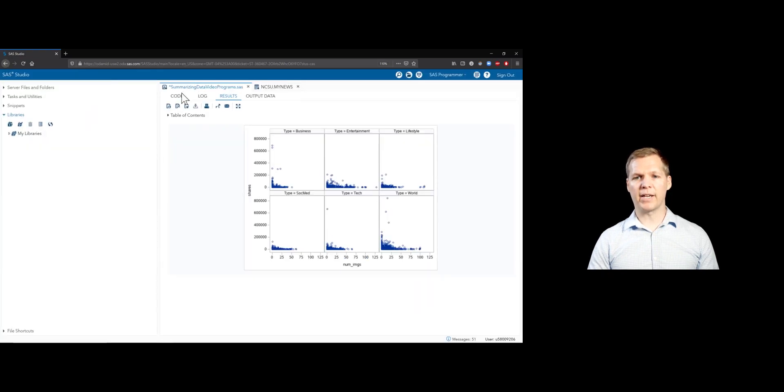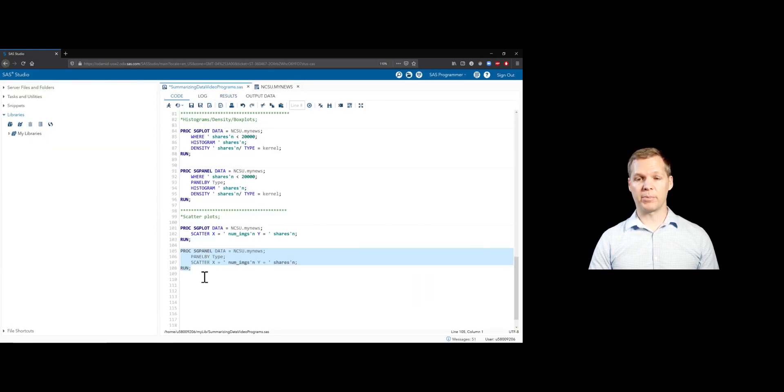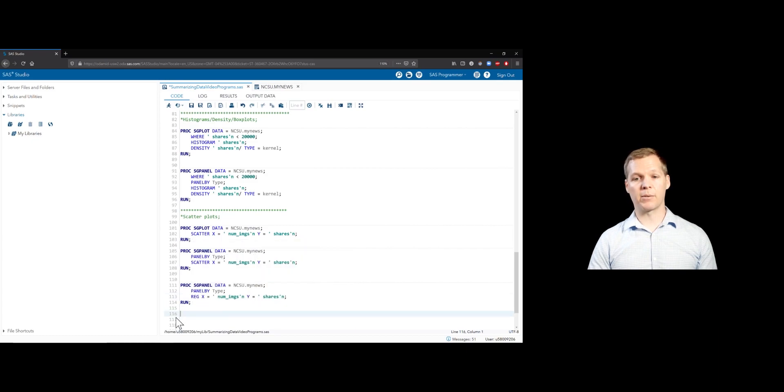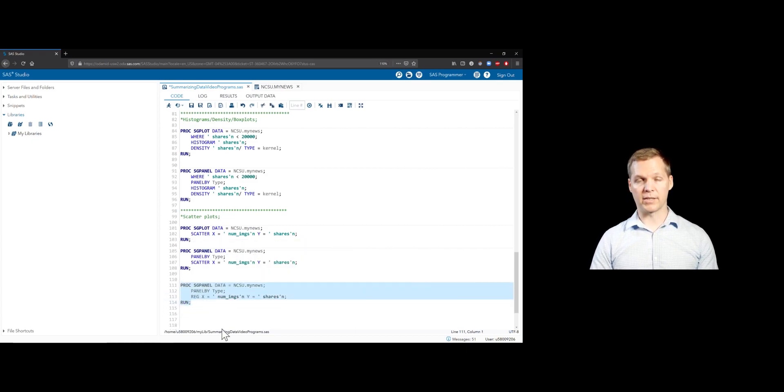Just to double check on that, let's go ahead and do the same exact SGPanel. But let's go ahead and add in some lines instead. So we'll change the scatter statement to a reg statement. And this will do the same scatter plot, but overlay the best linear fits.